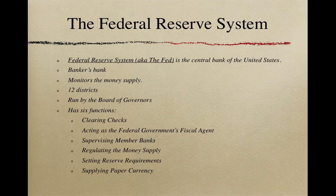Number three: supervising member banks. The Fed regulates banks that are members of the Federal Reserve System. Number four: regulating the money supply. The primary responsibility of the Federal Reserve is to determine the amount of money in circulation and either increase it or decrease it. Number five: setting reserve requirements. Member banks must keep a certain percentage of deposits as reserves. Reserves are funds set aside for emergencies, such as a rush of withdrawals.